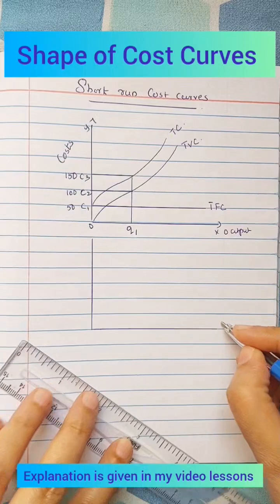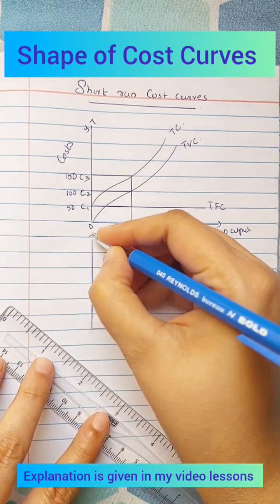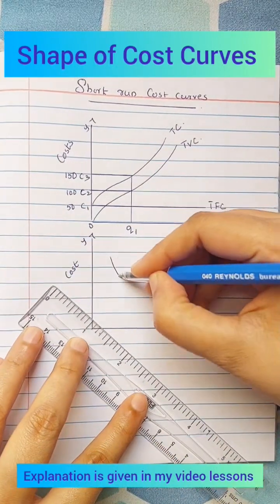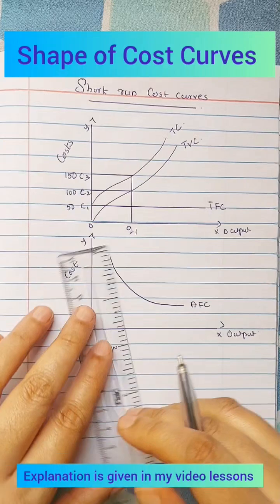Average fixed cost. It is equal to total fixed cost divided by output.